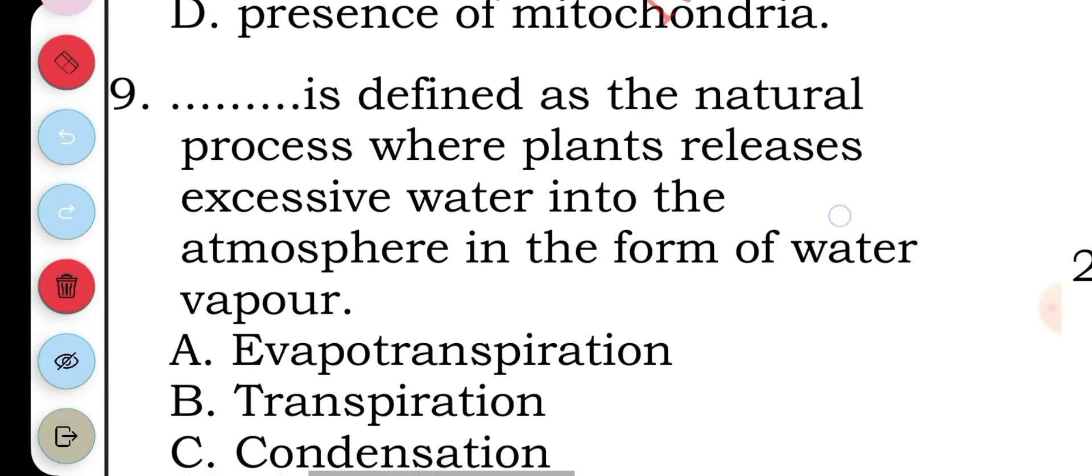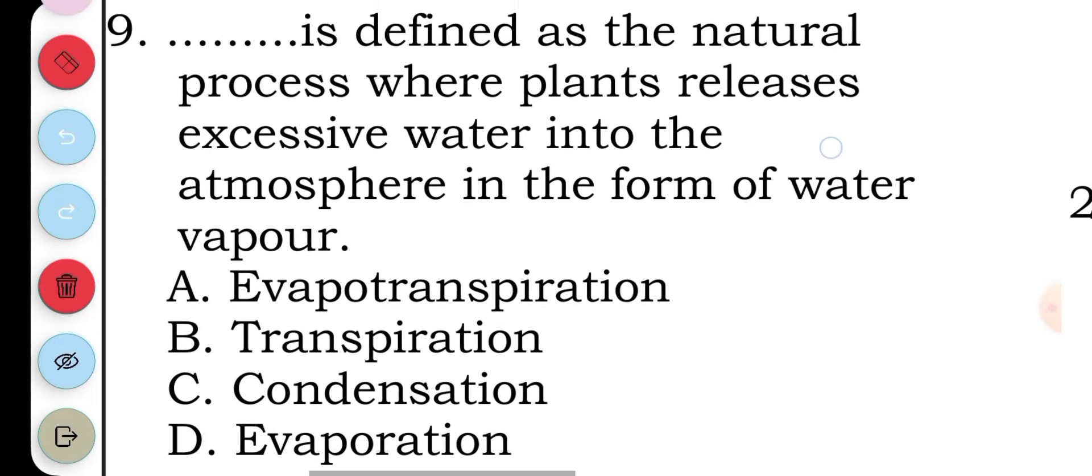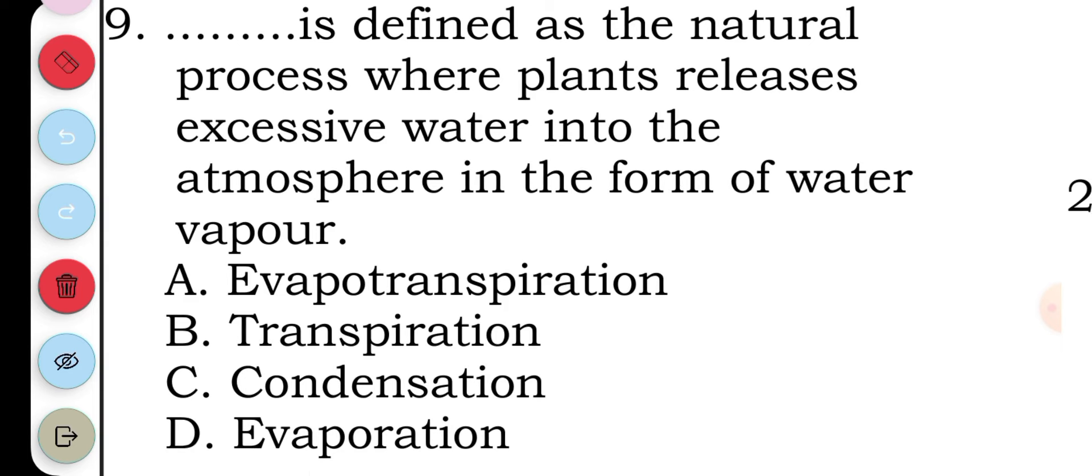Question nine: blank is defined as a natural process where plants release excess water into the atmosphere in the form of water vapor. The answer to question nine is transpiration.